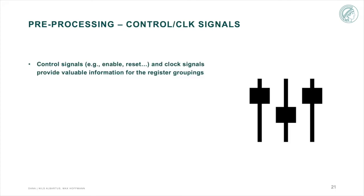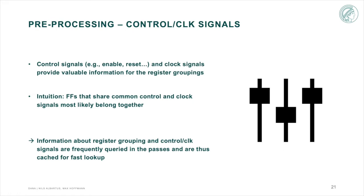Control signals and clock signals provide valuable information for the register grouping. The intuition here is that if a flip-flop shares common control and clock signals, they most likely belong together. But since multiple modules can often share the same clock and control signals, grouping by this metric would often end up in registers that are too large. As a rule, this often prevents grouping of wrong registers. All information about clock and control signals are cached for faster lookups, since these informations are often queried by the passes.